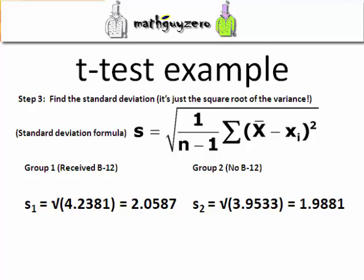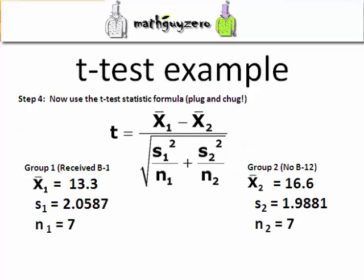After you've found the variance of each group, take the square root of those and those will give you the standard deviations. Those are listed in front of you. Now that you know the numbers for each of the variables there, go ahead and plug them into the formula. You should get a real number. Just plug and chug.